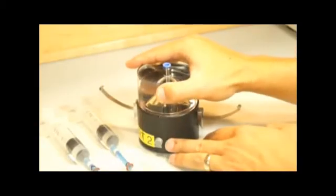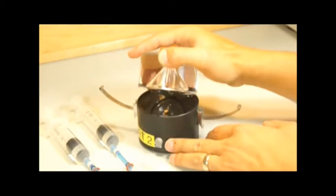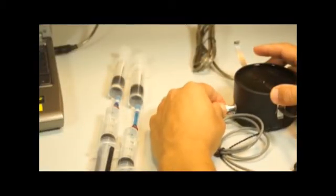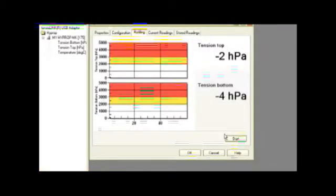Remove the degassing chamber from the HYPROP base. There should be about 1mm of water on the sampling base and around the chambers. Now connect the base to the computer and start TensioView. This lets you monitor pressure as you screw in the tensiometers.